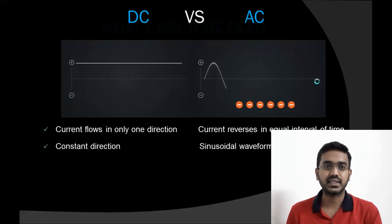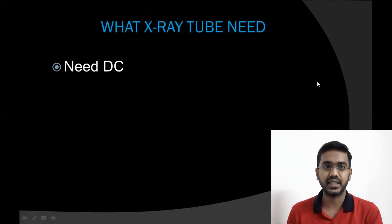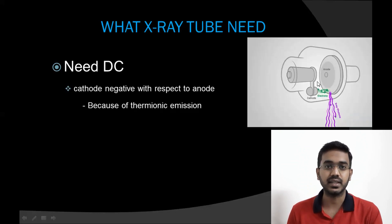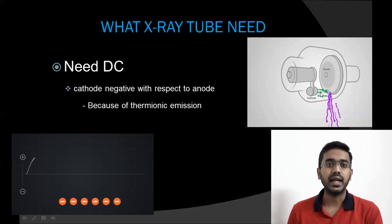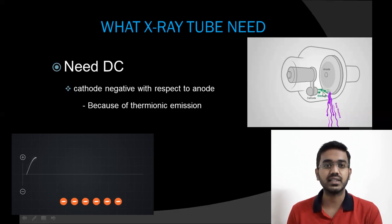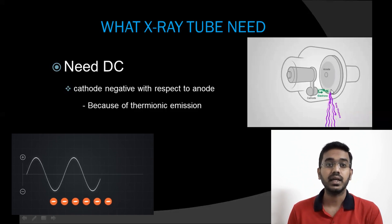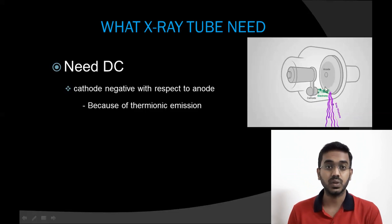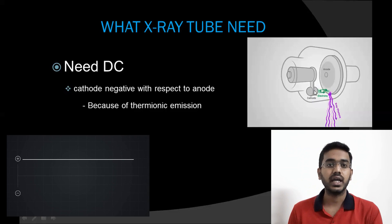Now let's discuss why we need direct current for the X-ray tube. If we give alternating current to the X-ray tube, during the first half of the cycle, the electron comes from the cathode and hits the target. Since AC is alternating in nature, the current reverses during the second half of the cycle. Here, the electron may flow from the target and hit the cathode, which will damage the cathode. So we need a constant current that flows in only one direction — from cathode to anode. Hence, we need direct current.